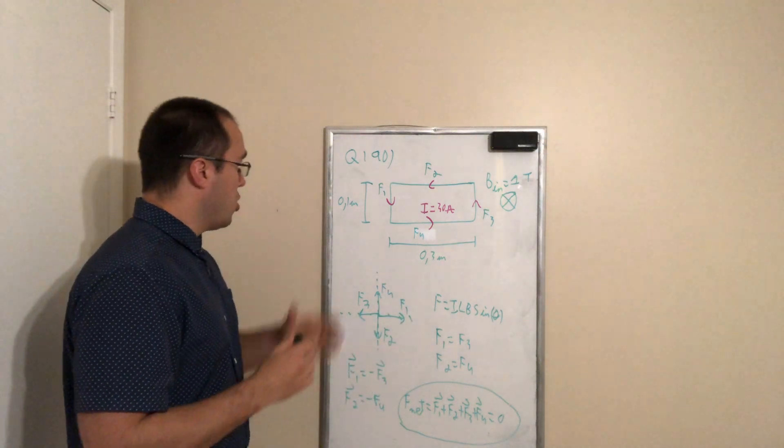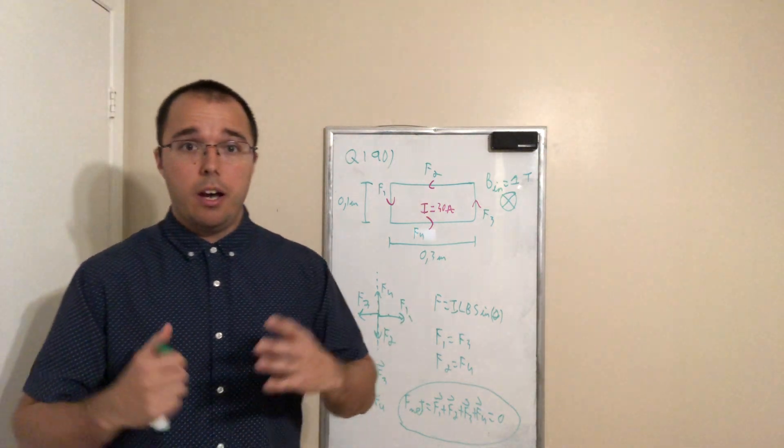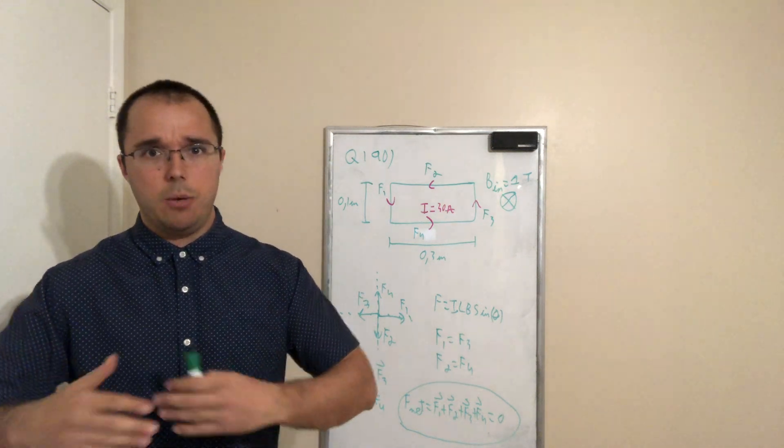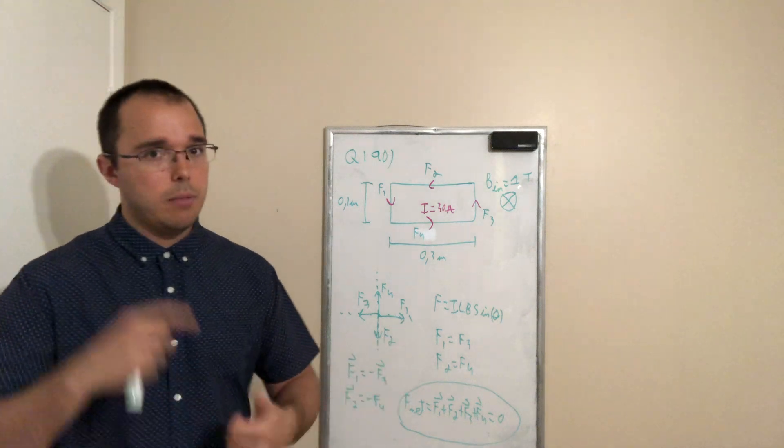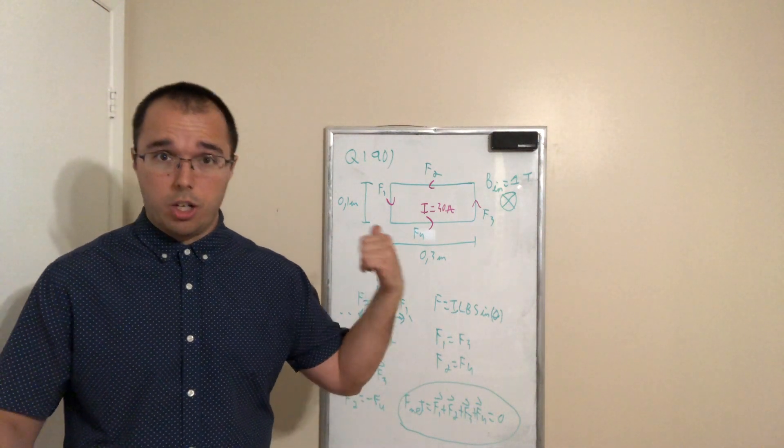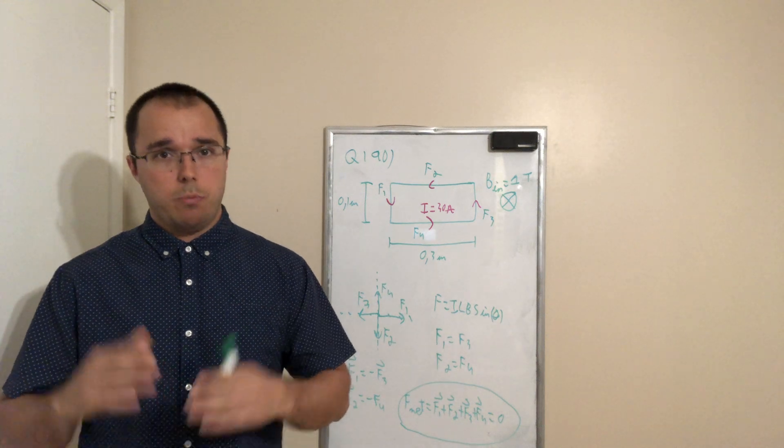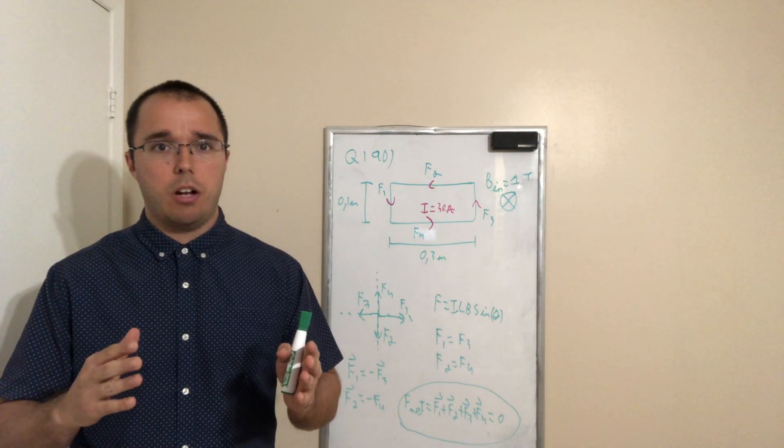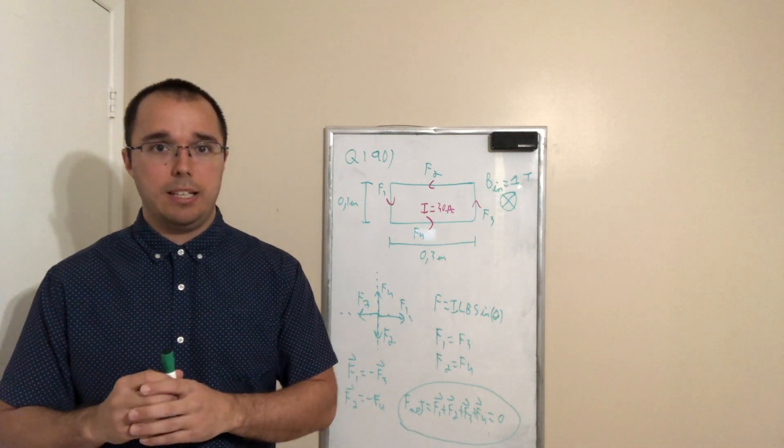So we are done with chapter eight. It is a big chapter. Make sure you study and practice these. Obviously there will be some questions regarding the mass spectrometer, velocity selector, these types of questions, the current carrying wire. So make sure you study these. See you in the next chapter. We're going to be talking about the source of the magnetic field.